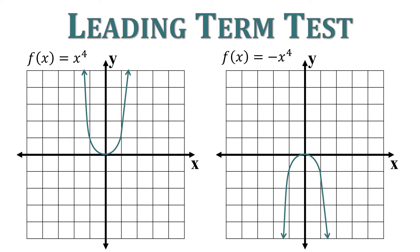Let's compare f of x equals x to the fourth and f of x equals negative x to the fourth. Here we have a positive 1 as our leading coefficient; for negative x to the fourth, we have a negative 1. When we have a positive leading coefficient, our function is going to open up or end up. When we have a negative leading coefficient, our function is going to end down or open down.